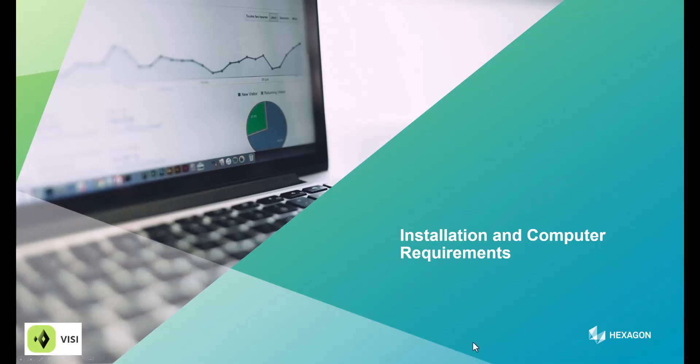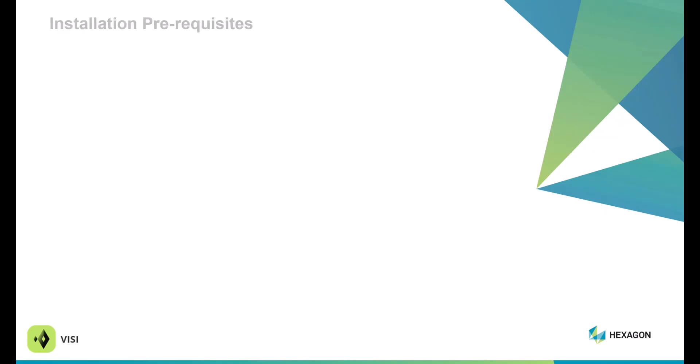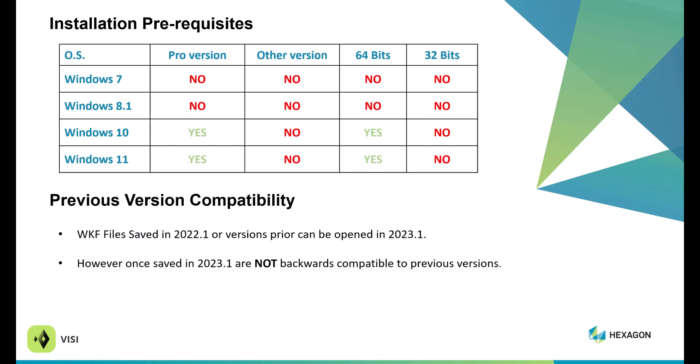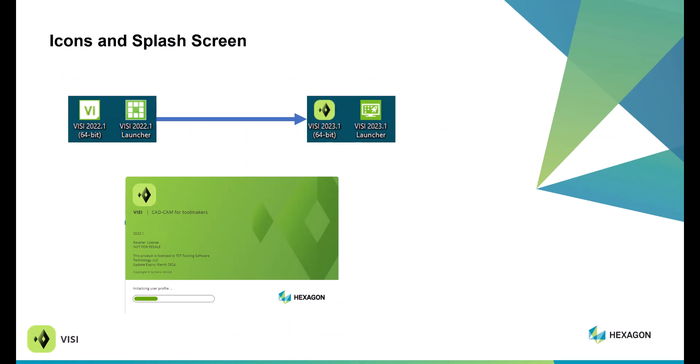We're going to go into the installation and prerequisites. Within the installation, it still requires Windows 10 or Windows 11 Pro and is only supported with the 64-bit version. Regarding previous compatibility, Visi 2022.1 files can be opened in 2023; however, once saved in 2023, it is not backwards compatible. The icons and splash screen have changed between 2022.1 and 2023.